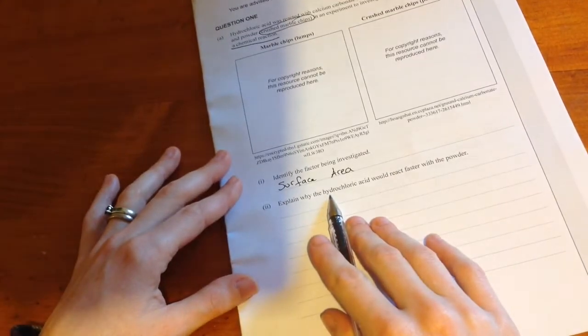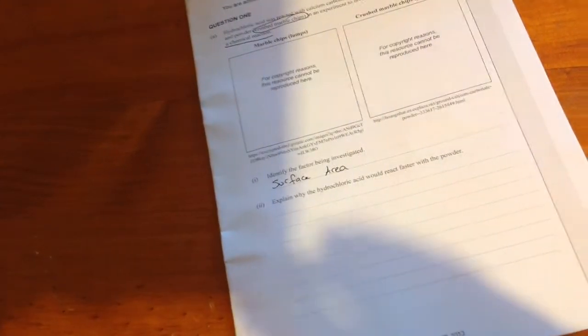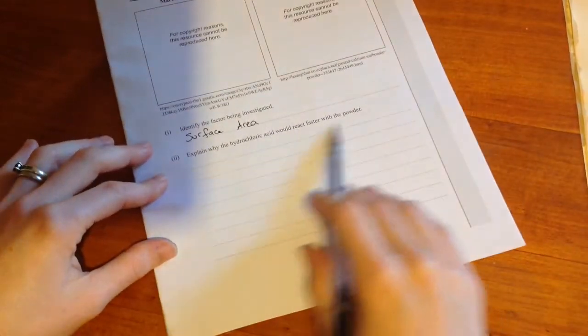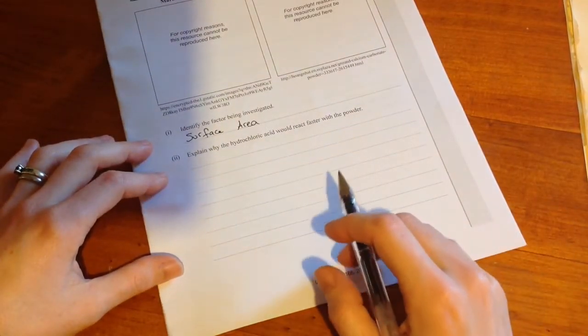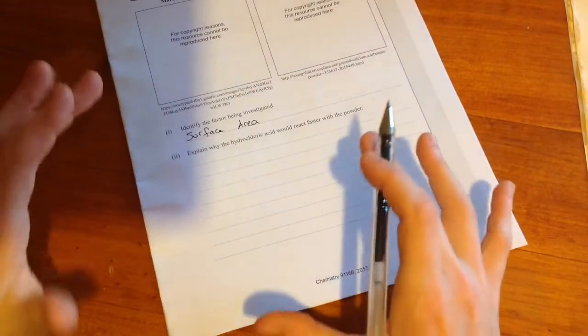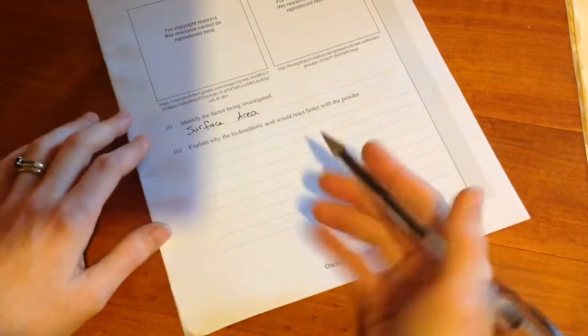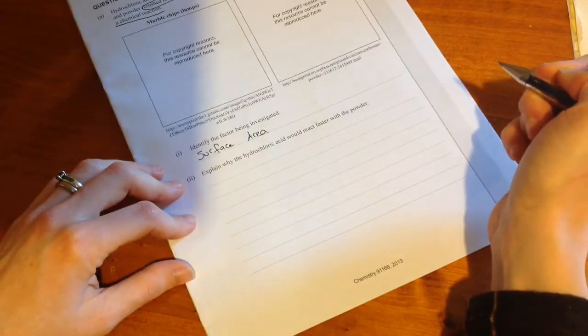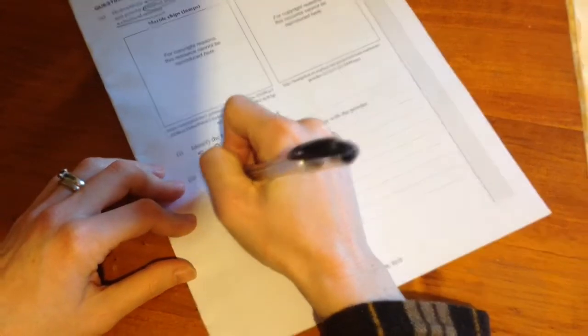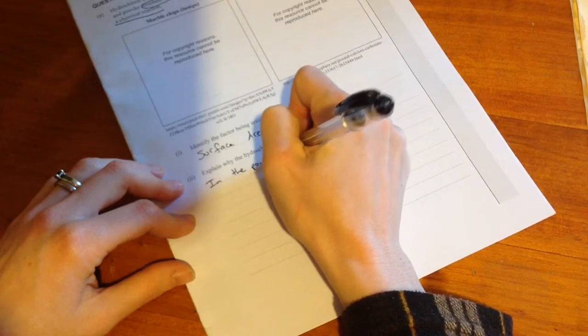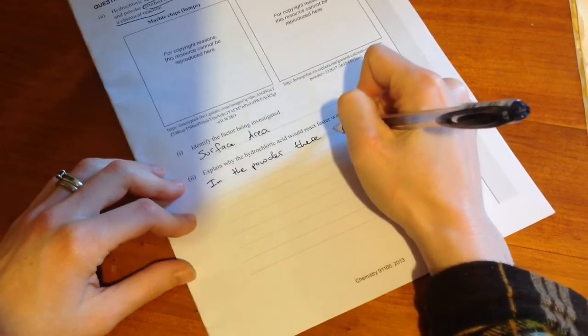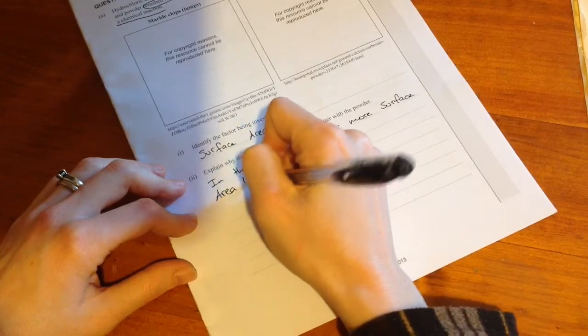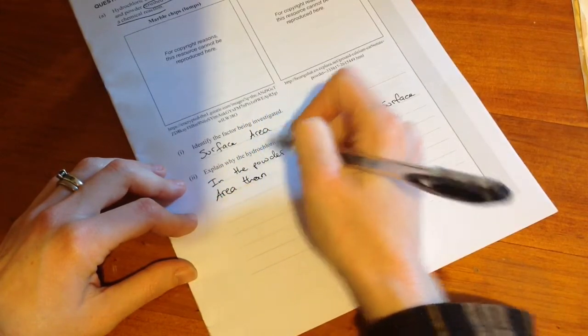Explain why the hydrochloric acid would react faster with the powder. Okay, this question will be asking for something to do with particle theory, that idea of collision theory. Even though it doesn't ask it, it's still a good idea to state it. Okay, so, in the powder, there is more surface area than in the lump.